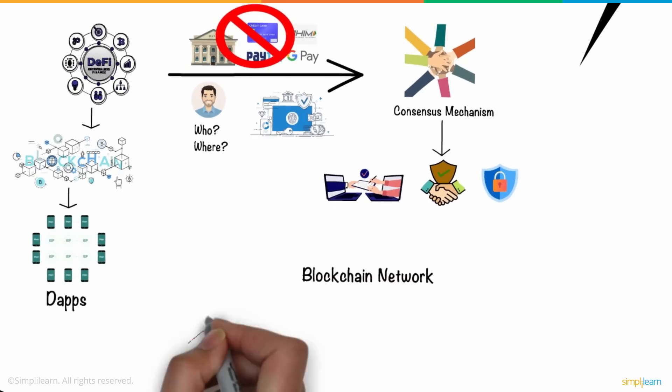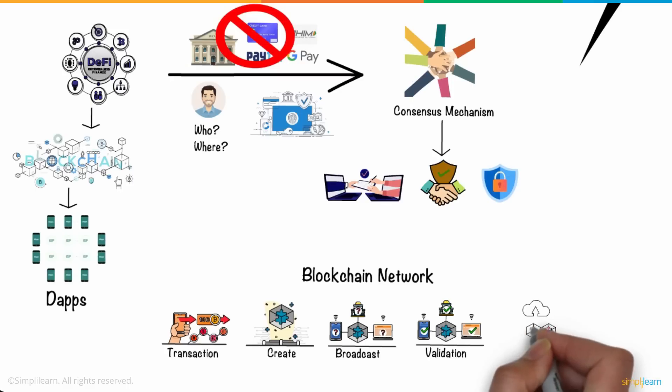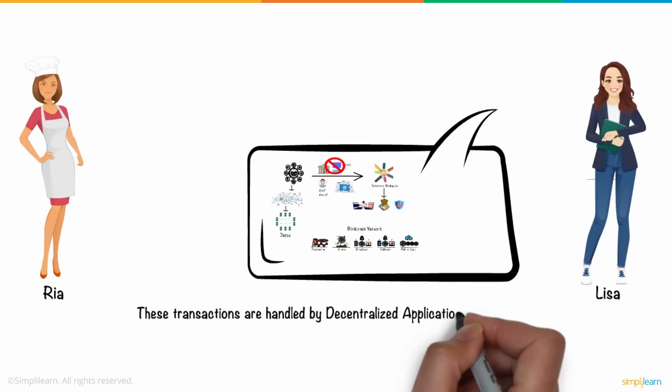In the blockchain network, transactions are stored in blocks, and other users in that network can verify them. If a transaction is verified by all its verifiers, the block is closed and encrypted, and a new block is created containing information from the previous block, thus creating a chain of blocks. And these transactions are handled by decentralized applications, or dApps.